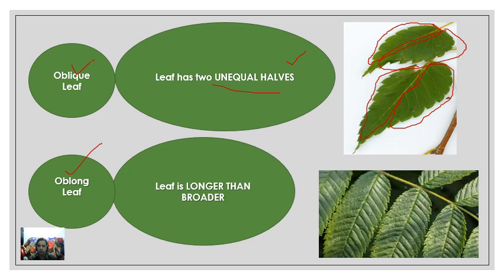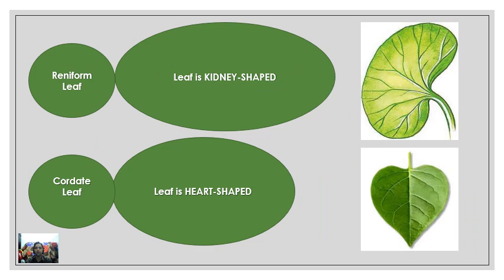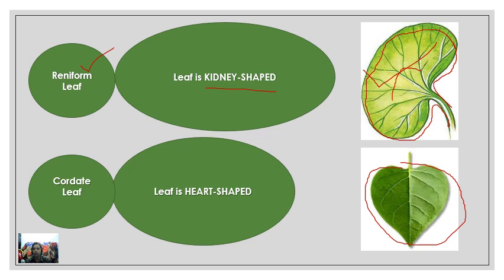Next is the oblong leaf — the leaf is longer than it is broad; its length is more as compared to its width. Then there is the reniform leaf, which is kidney-shaped. And next is the cordate leaf, which looks like a heart. 'Cor' or 'cordium' means heart, and so it is called a cordate leaf.